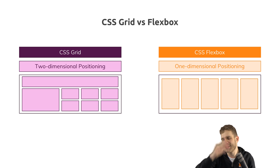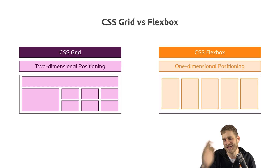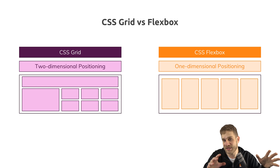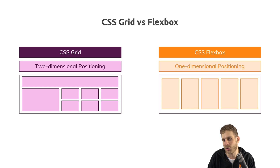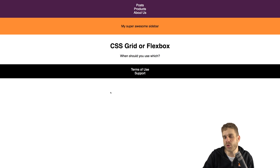Flexbox doesn't think of rows and columns. It's still a row of items and it just happens to run out of space and hence starts a new line. This is really important to understand. With the grid, you really define a layout which contains rows and columns and which therefore looks the way you want it to look. Now let's have a look at this in a real example where we'll also see how we can use both together, because they work together very well.